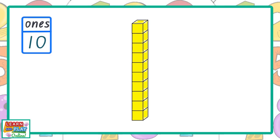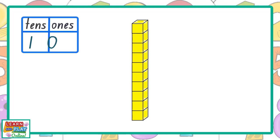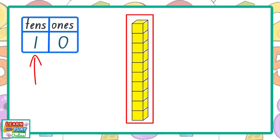This now means we need to extend our table to include a tens column, because now we have one group of 10 and no ones blocks left, which is why the digit zero is in the ones column. Let's try counting a different set of blocks.